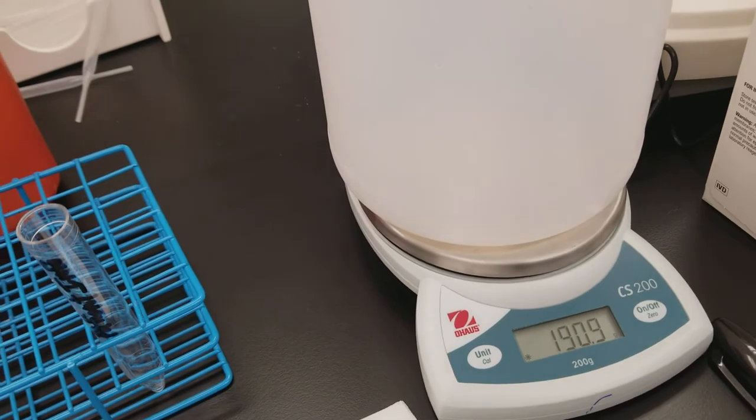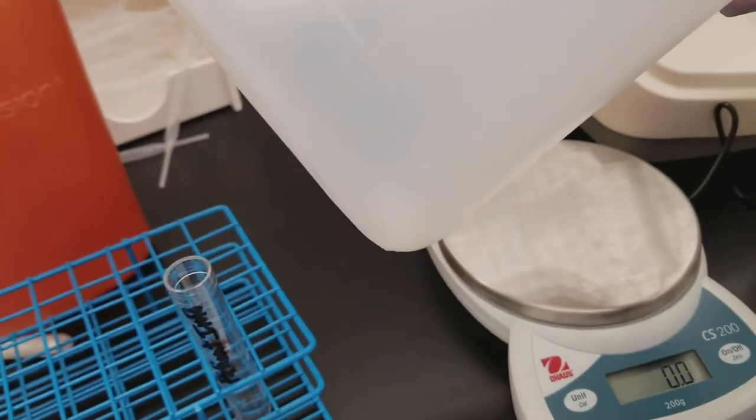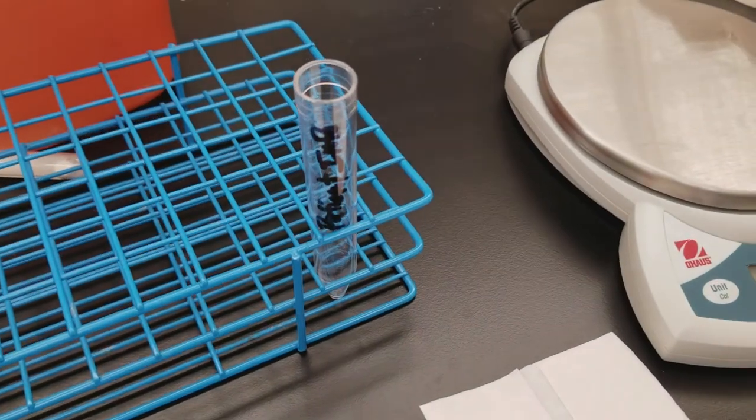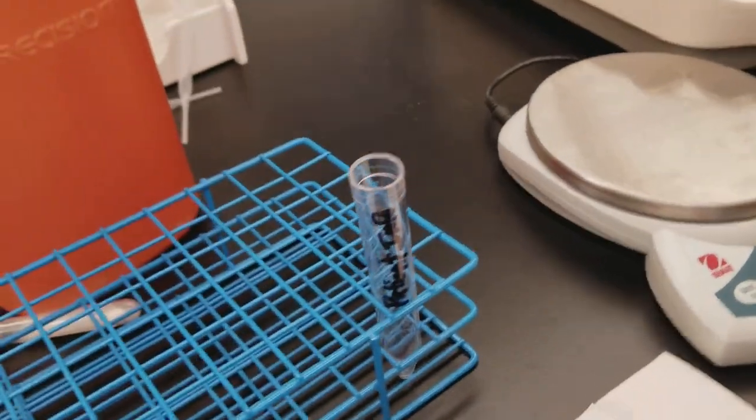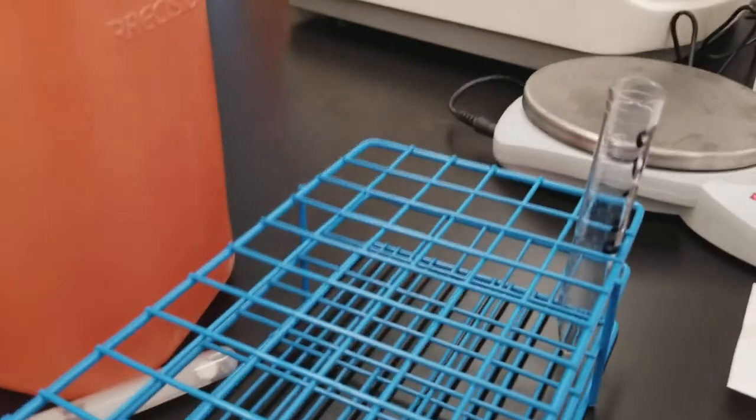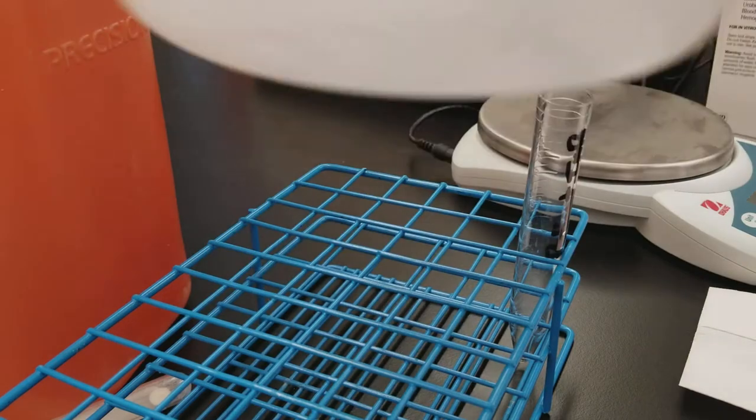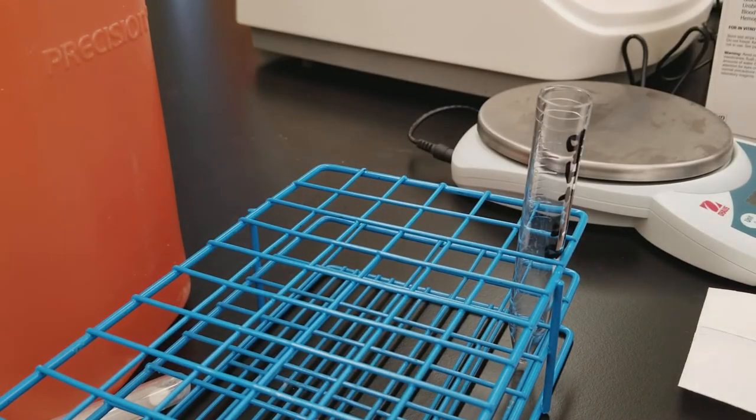And then what I'm going to do is I'm going to aliquot specimen from here because I need it for some testing that I'm doing in the lab. So since there's hardly any in here, I am honestly just going to swirl, always swirl, and then I'm going to pour it.